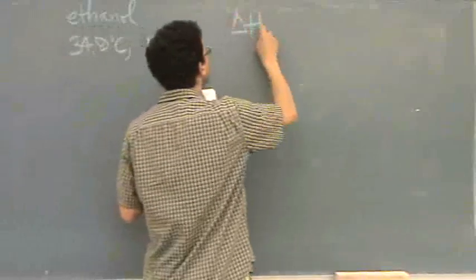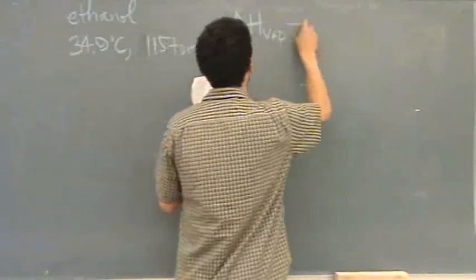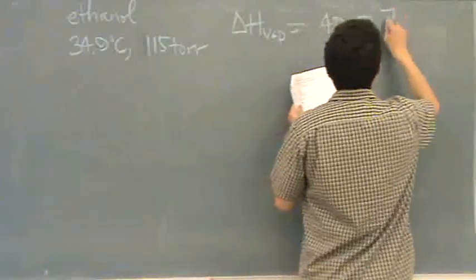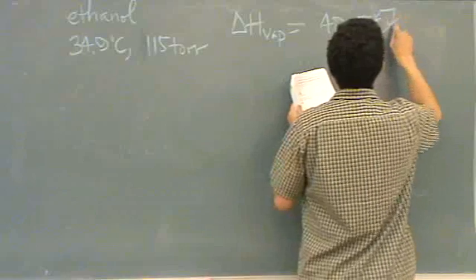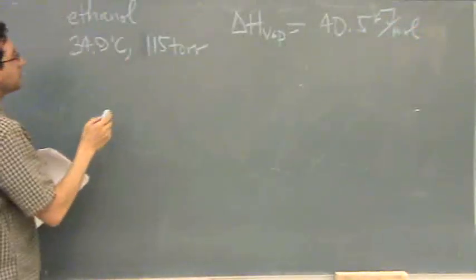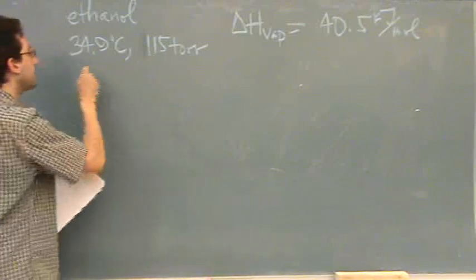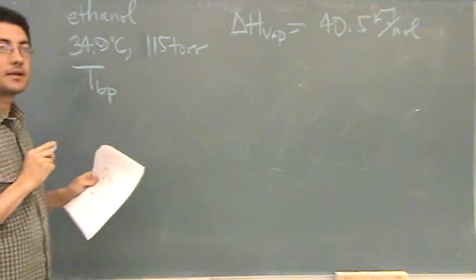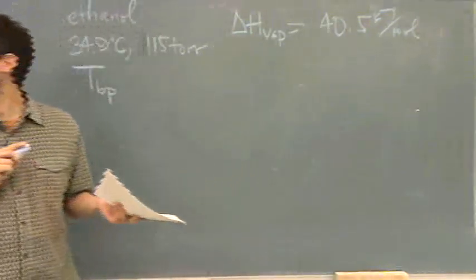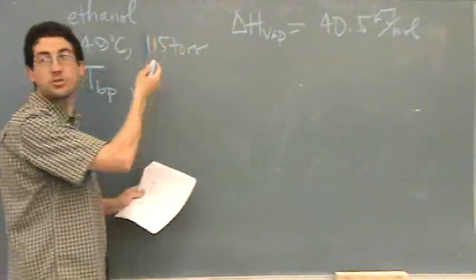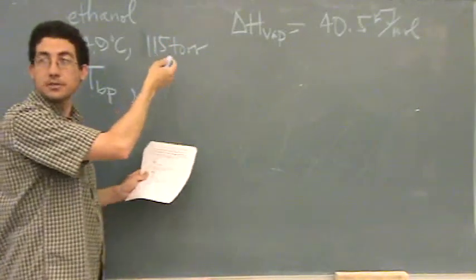Delta H of vaporization is 40.5 kilojoules per mole. Find the boiling point — so I want the boiling point, that's the temperature. By the way, what's the pressure at the boiling point? One atmosphere — let's just do torr since this is in torr — 760.